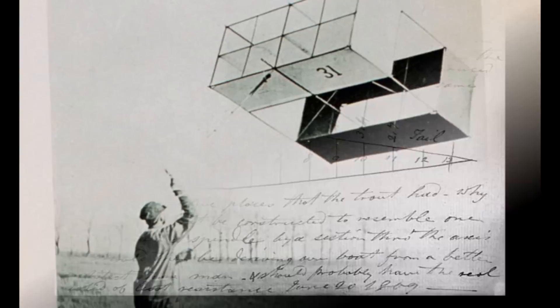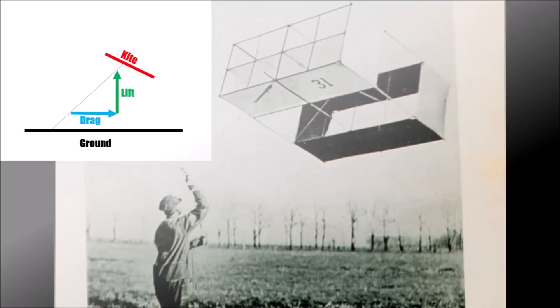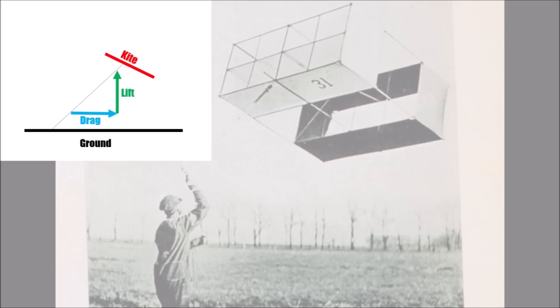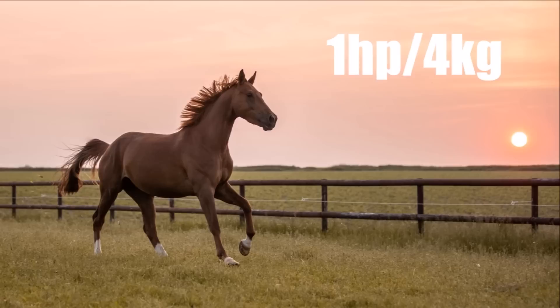But Cayley himself didn't use wing profiles for his machines. The general scientific theory at the time was based on kites — angled flat plates on a string which fly in the wind, so they are easy to measure. People measured the angle of the kite and the wind speed, getting a resulting force perpendicular to the plate, and could work out the numbers for lift and drag. But in this theory the drag was very high compared to the generated lift, resulting in a requirement of 1hp per 4kg — meaning 1hp was required to overcome drag to keep 4kg in the air.